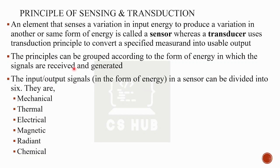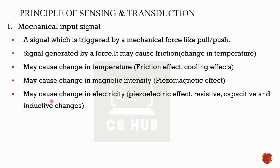Input-output signals in the sensor can be divided into 6 categories based on input and output types. The six signal types are: Mechanical, Thermal, Electrical, Magnetic, Radiant, and Chemical. Different transduction principles apply to each. For mechanical input signals, the principles include force (pull or push), piezo-magnetic effect, piezo-electric effect, resistive, and capacitive changes.